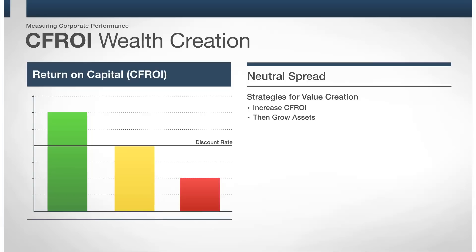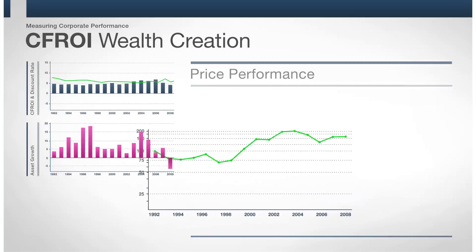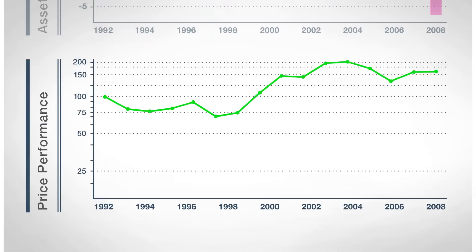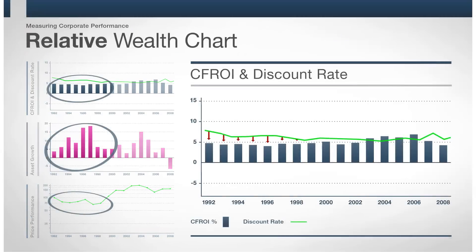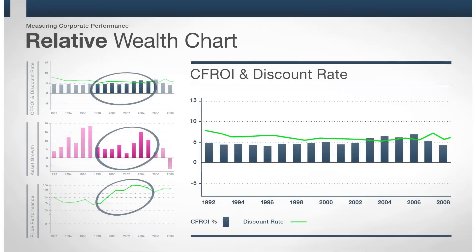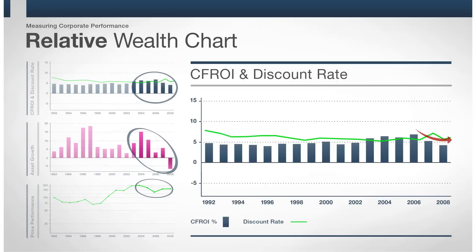These wealth creation principles and their relation to shareholder value creation come to life when we combine the history of FedEx's returns relative to the cost of capital, the growth of the company's asset base, and the stock price performance. This tells us whether management has been reinvesting in the business, whether those investments have created value, and if the market has responded. We do this in the relative wealth chart. Between 1993 and 2000, FedEx's CFROI levels were consistently below its cost of capital, yet the company continued to grow aggressively, destroying shareholder value. Between 2001 and 2005, management's strategy changed; FedEx's CFROI level gradually increased to exceed the cost of capital, followed by asset growth creating wealth for shareholders. Unfortunately, the company couldn't sustain the asset growth strategy, and FedEx's returns fell below its cost of capital, causing the stock performance to suffer.